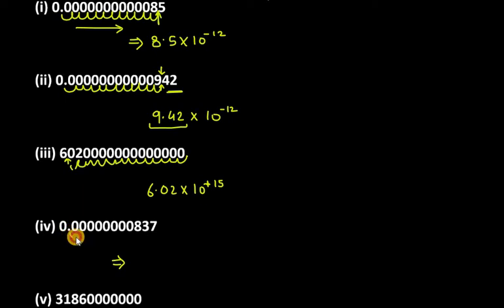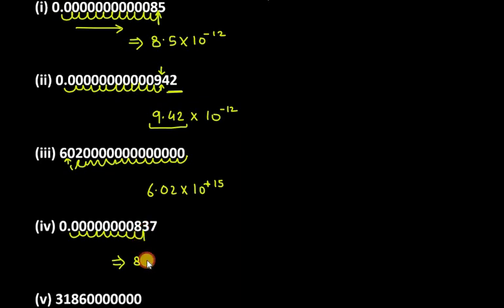For the fourth number, the point is on the left side so we start from the left side. Moving: 2, 3, 4, 5, 6, 7, 8, 9 — stop here. So 9 moves total. The answer becomes 8.37 into 10 raised to the power of minus 9. This is your answer.